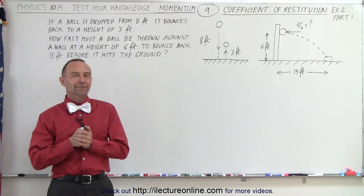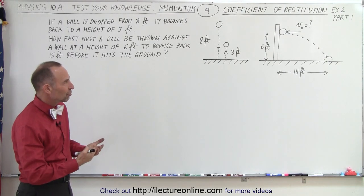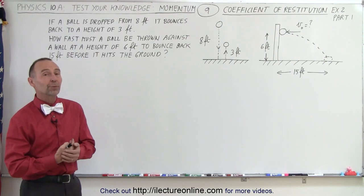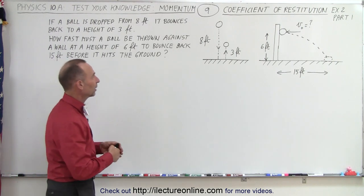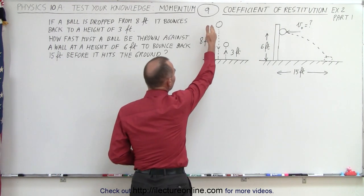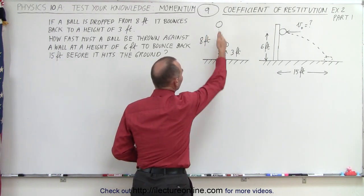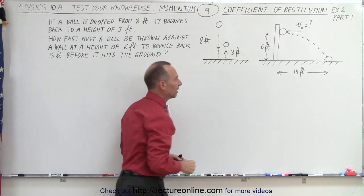Welcome to ElectronLine. Here we have an interesting application of the coefficient of restitution. We're given that a ball is dropped from a height of 8 feet and it bounces back to a height of 3 feet.